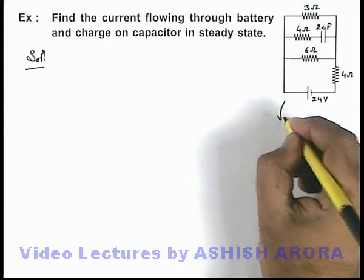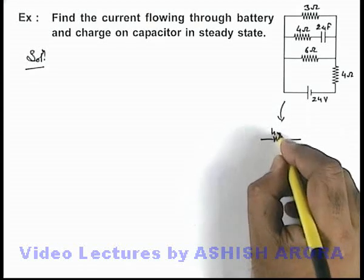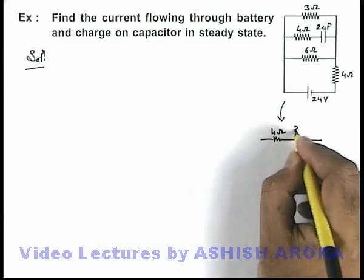And in this situation the circuit can be redrawn like this. This is the 4 ohm resistance, this is the capacitor of 2 micro farad.